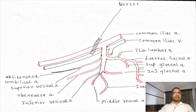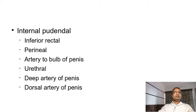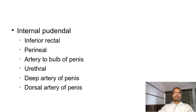Next one is inferior gluteal artery. This is the lowermost branch. The inferior gluteal artery goes downward laterally and it passes in between the first and second branches of the sacral nerve — in between S1 and S2 roots. It will supply the gluteal region.